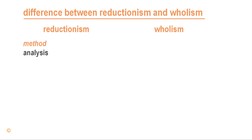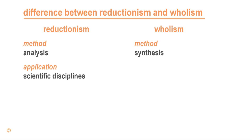However, from the perspective of a holistic theory like general system theory, complexity theory, or biometrics theory, this is only half the truth. Holistic theories claim that the functioning of the system and its parts changes in different environments. The method which explores this change is referred to as synthesis. The reductionist method of analysis is applied in the various scientific disciplines and also guides interdisciplinary research.